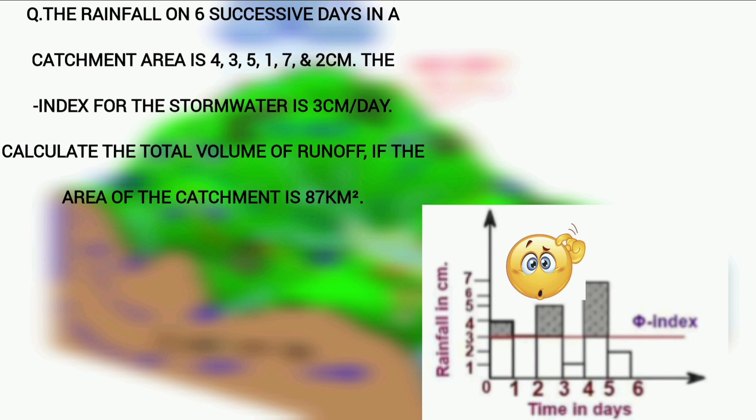The rainfall on six successive days in a catchment area is 4, 3, 5, 1, 7, and 2 centimeters. The phi-index (there is a correction, please correct it yourself) for storm water is 3 centimeters per day. Calculate the total volume of runoff if the area of the catchment is 87 kilometer squared.